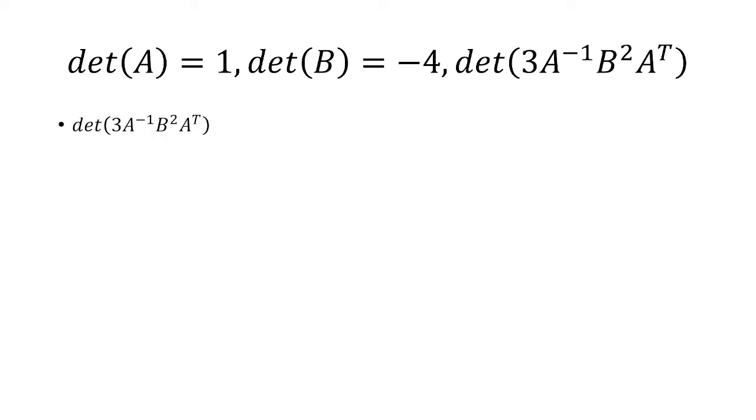Starting off with this determinant, we're going to use the properties. First, the determinant of A inverse is the determinant of A and the inverse of that. When I use the word inverse, it's really the reciprocal. So the determinant of A is 1, so the inverse of 1 is just 1.